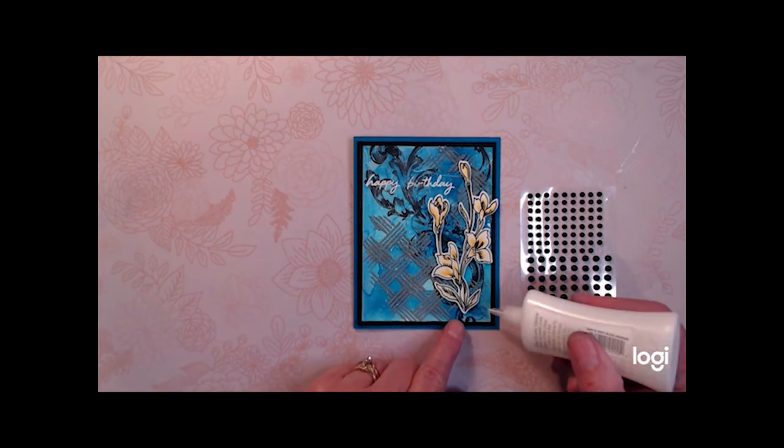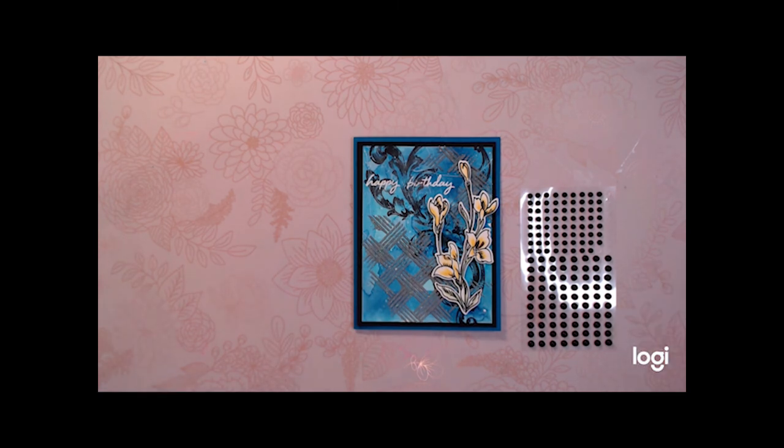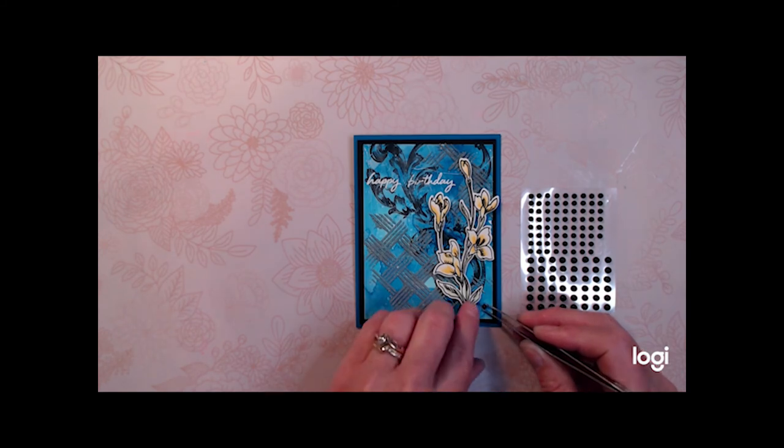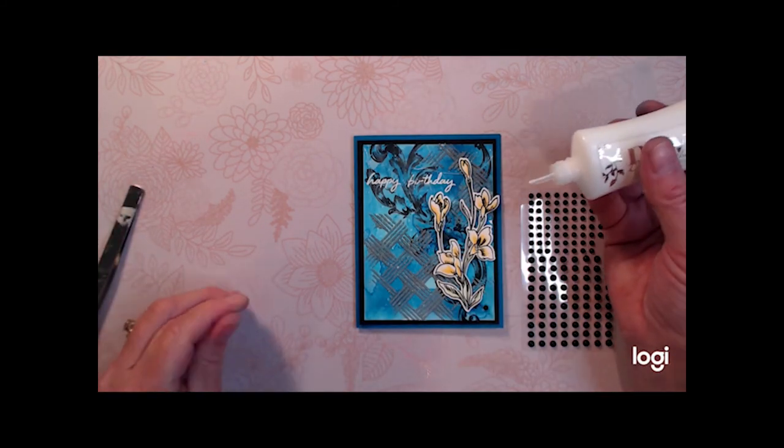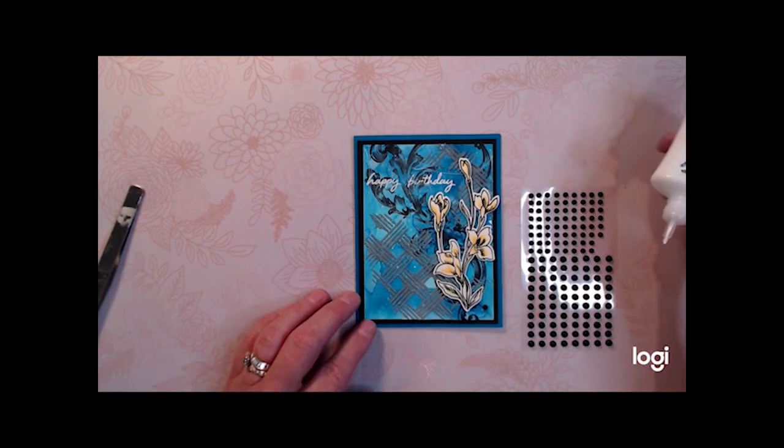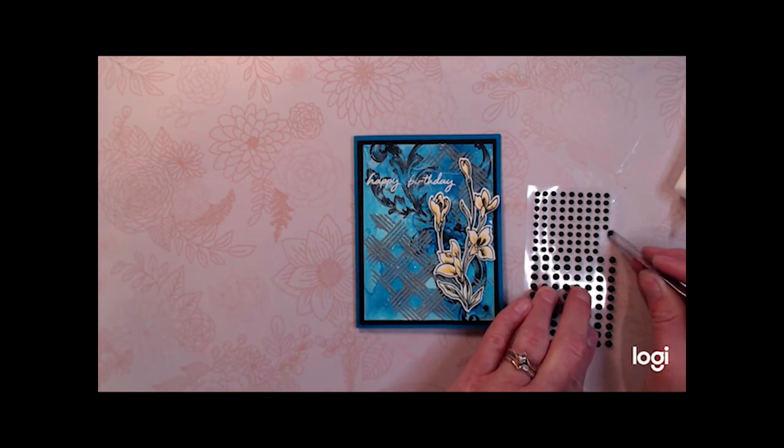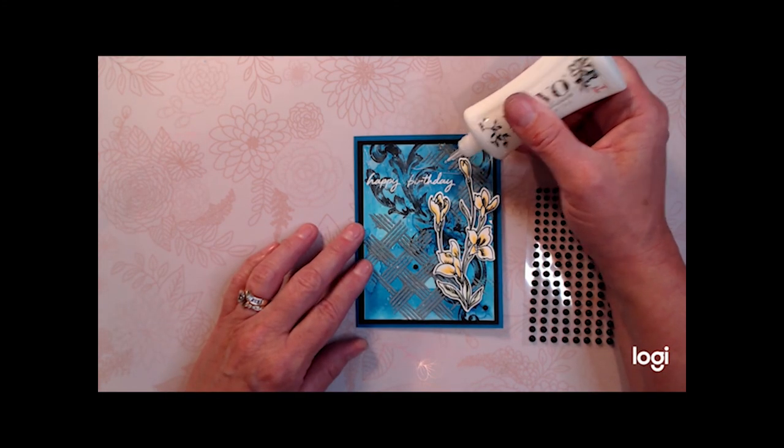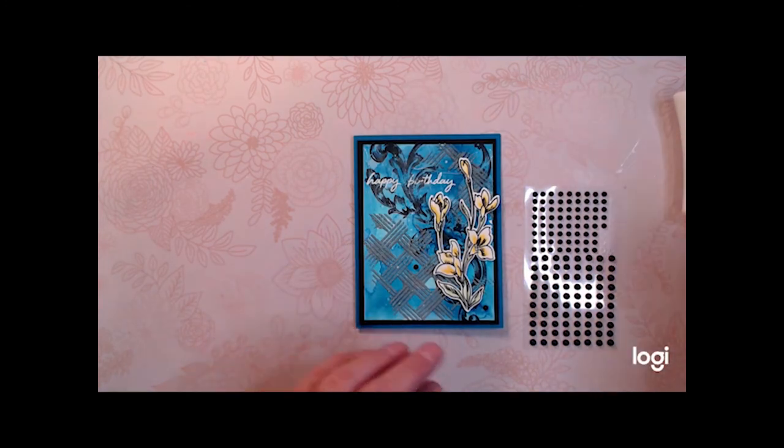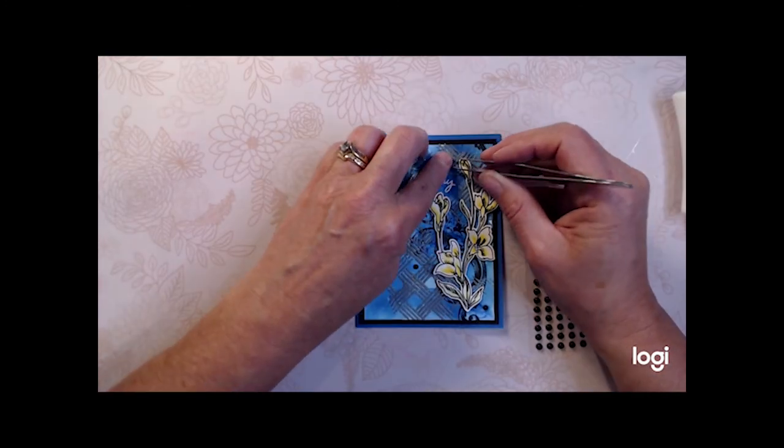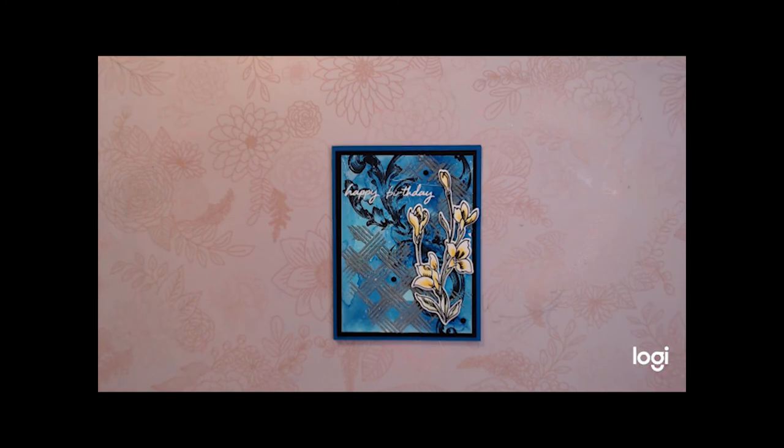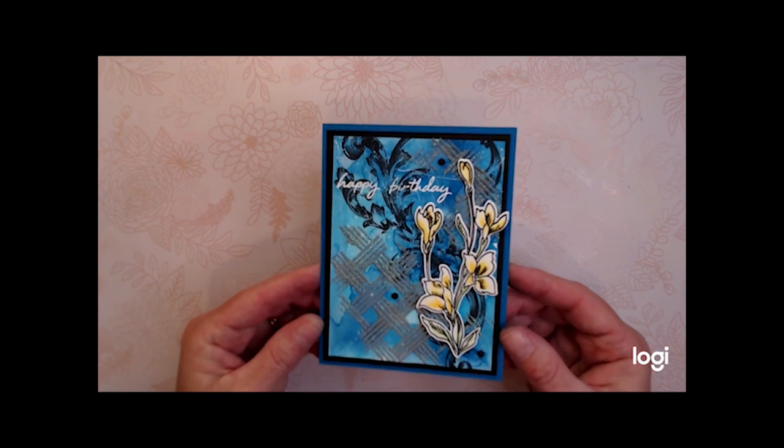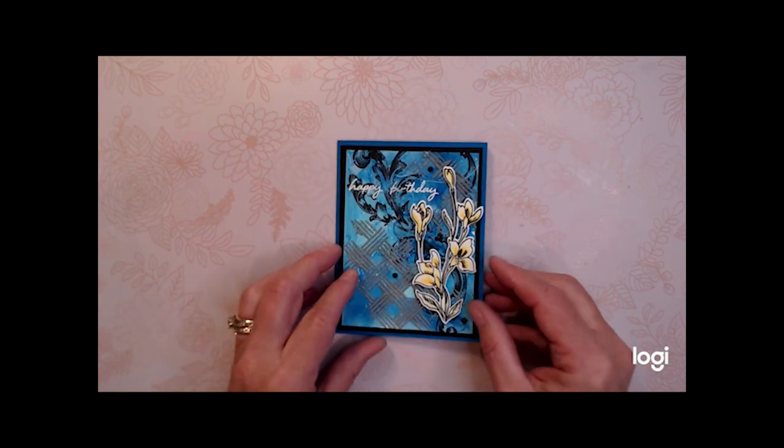And the final steps are to put some of the black matte dots on the front of the card. I have mentioned this before but I think it is worth saying again. These dots and embellishments often come with glue on the back. But I highly recommend using a liquid glue to attach them in place. The glue that they come with is not typically adequate to permanently hold it to the face of the card. So here is the final card. I hope you enjoyed watching this video and learned as much as I did in the process of creating this card.